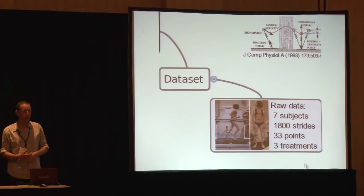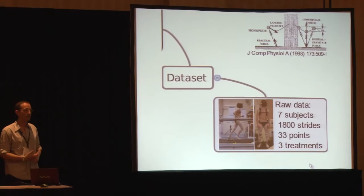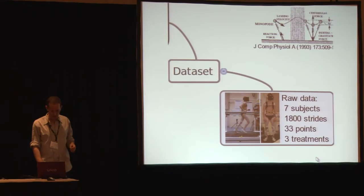So what's our data set? As I believe my predecessor here said, you need a crap load of data to do this. And so the data for us has been seven subjects, each doing runs of 1,800 strides. So these are about 20-minute runs on the treadmill. 33 points. There are three different treatments. I'm only going to be discussing data from simple running, but we've done some perturbation analyses as well.